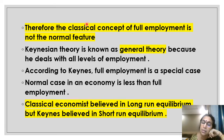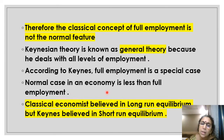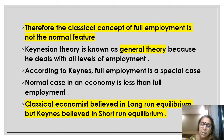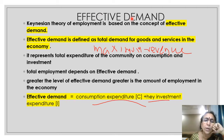Keynes challenged the classical theory. He said that full employment is not a normal feature. Keynesian theory is known as the general theory because it deals with all levels of employment. Classical economists believed in long-run equilibrium, whereas Keynes believed in short-run equilibrium. According to Keynesian theory, all are dead in the long run, so we should not believe in the long run. Keynesian theory is basically a short-run theory, and Keynes introduced his theory with the help of effective demand.